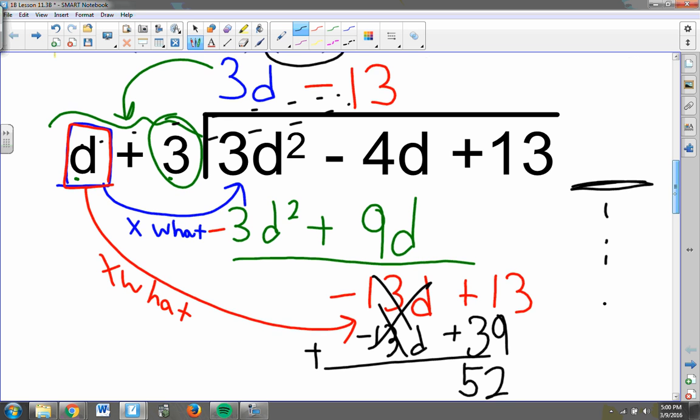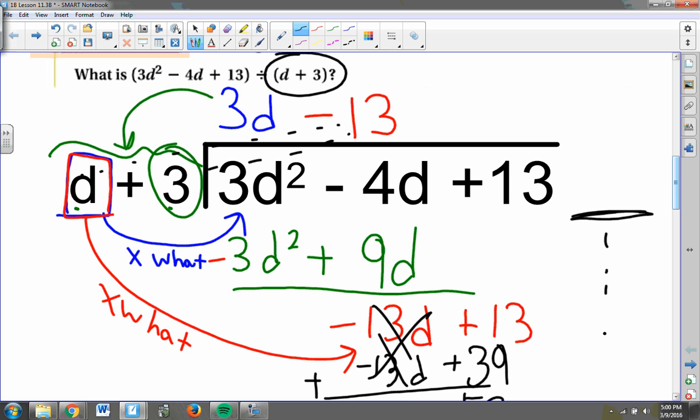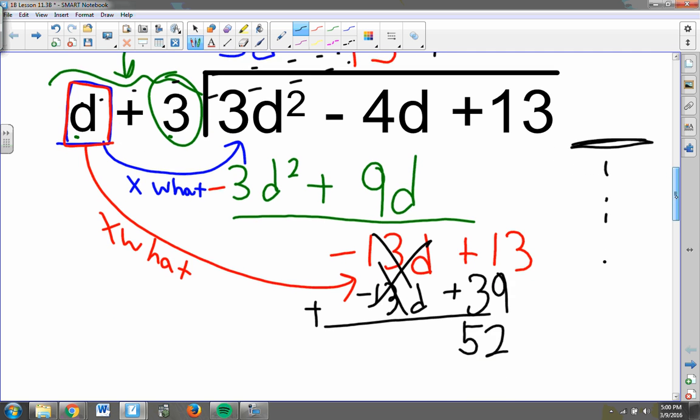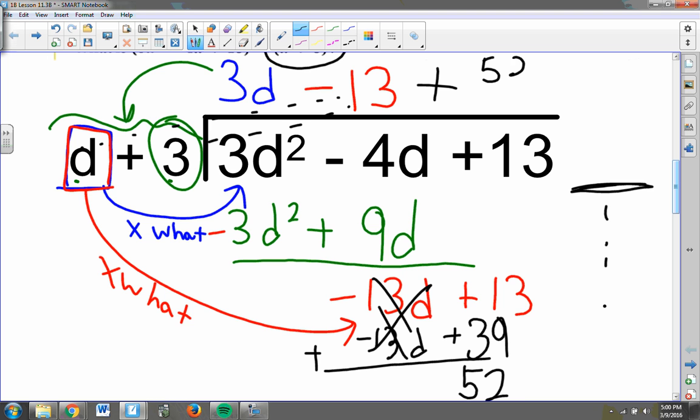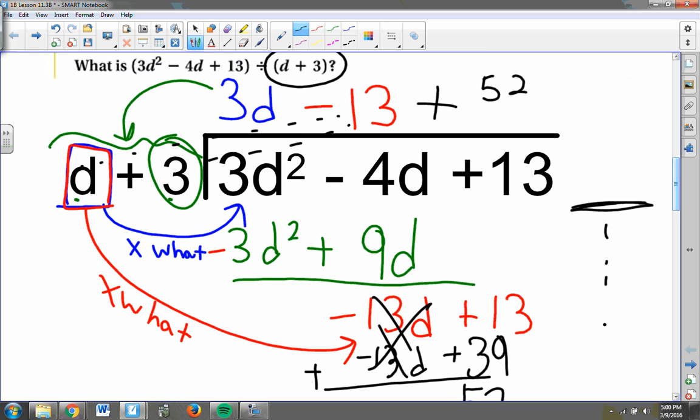And as I said before, we write our answer like a quotient plus, and once you've run out of terms to pull down, you put a plus sign, then write your remainder, 52, and make that the top of a fraction with the bottom of a fraction being d plus 3, because that is what I started with. So my final answer for this division is 3d minus 13 plus 52 over d plus 3.